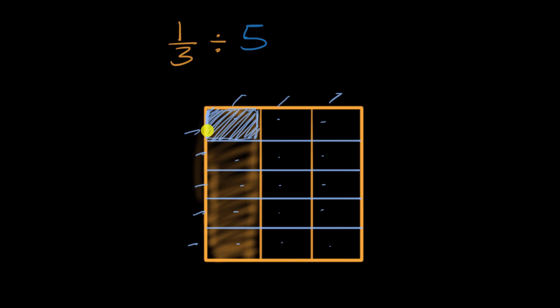And so the one third divided by five is just one of those fifteenths. So that right over there is one of those fifteenths. So this is going to be equal to one fifteenth. And we are done.